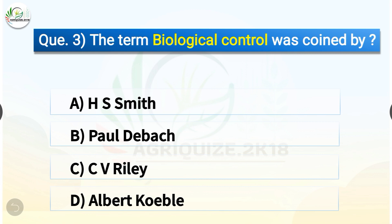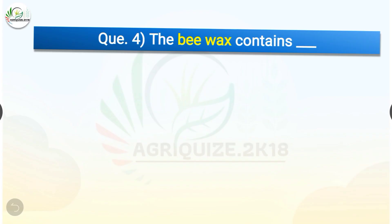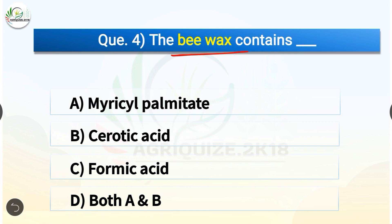Question number three: The term 'biological control' was coined by whom? The options are: H.S. Smith, Paul DeBach, C.V. Riley, or Albert Koebele. The correct answer is option A — H.S. Smith. So the term 'biological control' was coined by H.S. Smith.